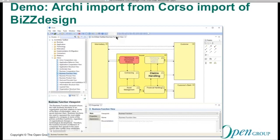This is imported from Corso, who had previously imported from BizDesign. We lost some of the labels on the connections, but fundamentally we always exchange the semantic elements — the model itself, the elements, and relationships. This is version 1.0, and there are improvements that could be made in future versions. But as you can see, between BizDesign Architect, Corso's tool, and Archie, we're getting a very good 95% integrity of exchange.